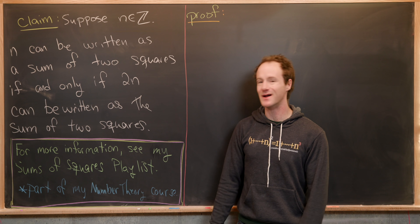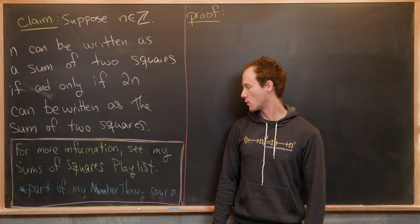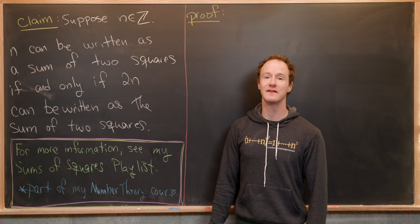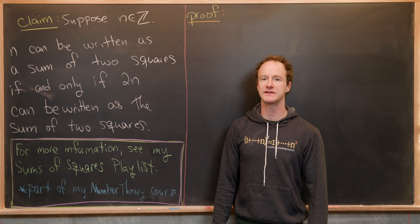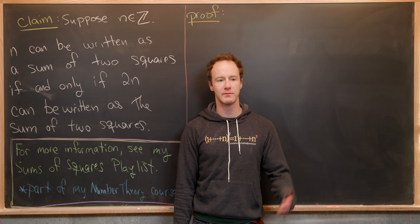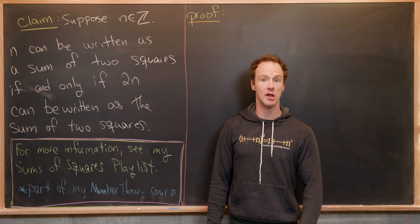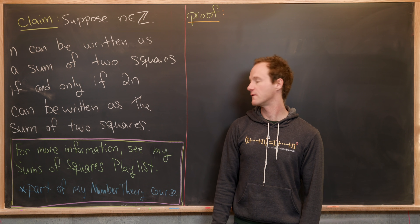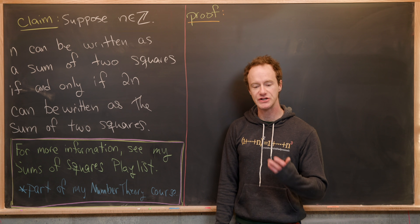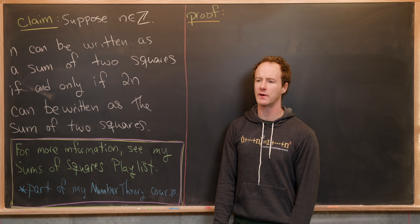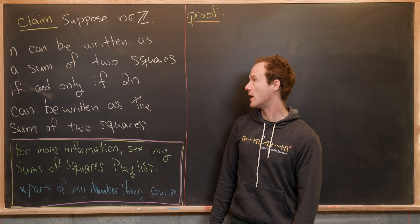As part of my number theory course that I taught last fall, I made a playlist on the sums of squares. Some numbers can be written as the sum of two squares, others as the sum of three squares, and I think all numbers can be written as the sum of four squares. So if you're interested, look for that playlist — though note it was made early on, so the videos aren't quite as refined as they are now.